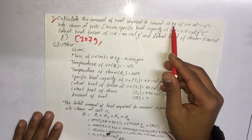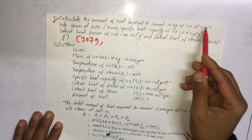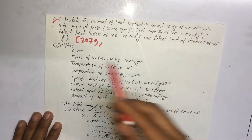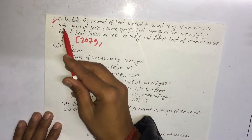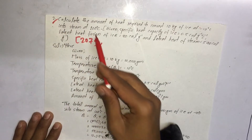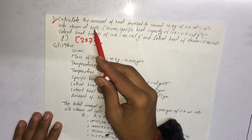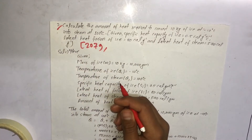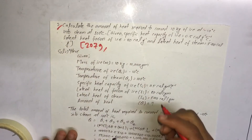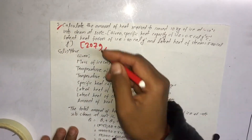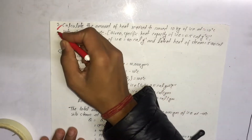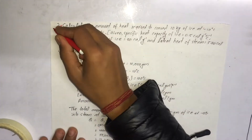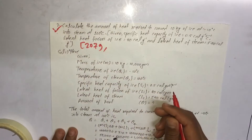So, the amount of heat required to convert 10 grams of ice at minus 10 degrees Celsius into steam at 100 degrees Celsius.